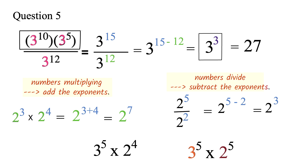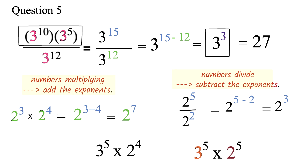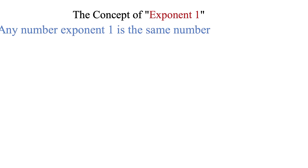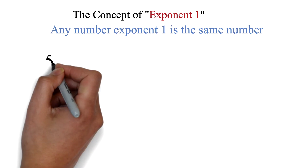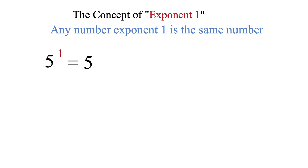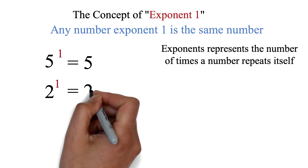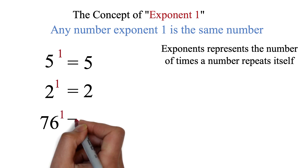Before we look at our next question, let's explore the concept of exponent 1 and exponent 0. You don't really need the explanation to solve GED math questions — if you can remember the general statements, you're good. The concept of exponent 1: any number exponent 1 is the same number. For example, 5 exponent 1 is 5. Since exponents represent the number of times a number repeats itself, 2 exponent 1 means 2 repeats just once, which is simply 2. So 76 exponent 1 is 76.